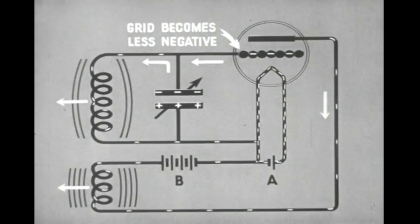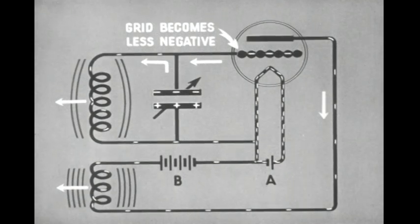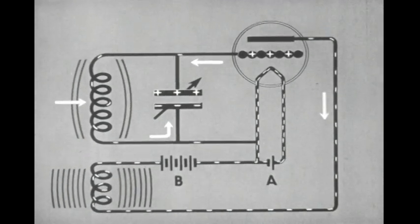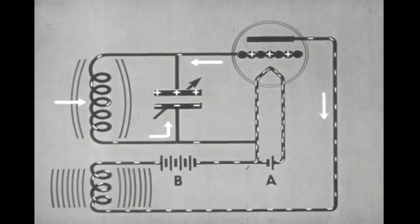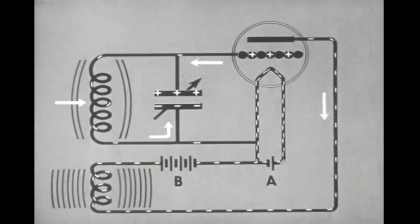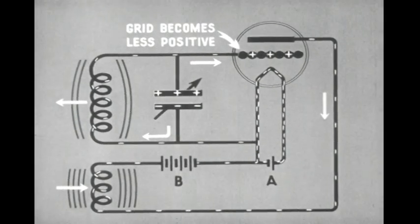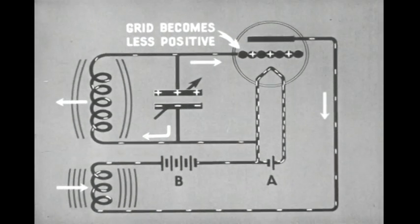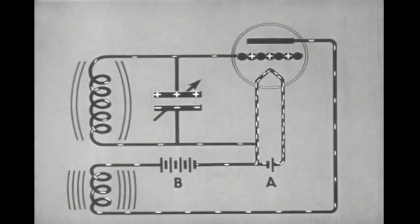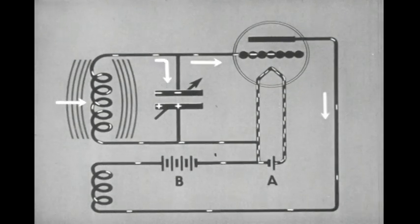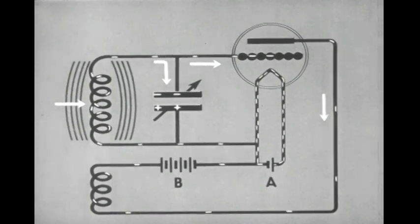Thus the grid becomes less negative and more plate current flows. When the plate current reaches maximum, there is no change in the field, hence no current is induced in the grid coil. The field of the grid coil collapses and helps to charge the condenser. The condenser then discharges, the radio-frequency current in the grid circuit changes direction, the grid becomes less positive, and the plate current is reduced. The collapsing field of the plate coil assists in building up the current in the grid circuit. As the grid reaches a high negative charge, the plate current is virtually cut off, and the field of the grid coil collapses and charges the upper plate of the condenser, completing the entire cycle.